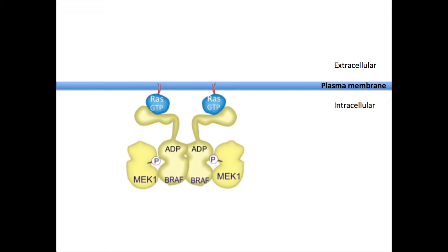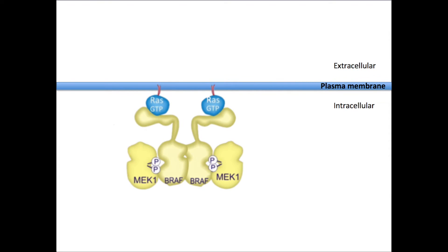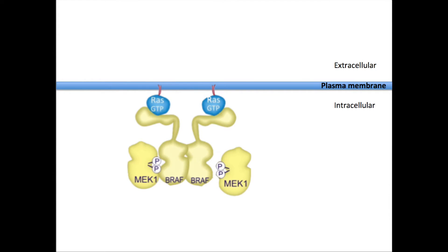Now BRAF can phosphorylate MEK. BRAF will hydrolyze ATP, so one of its phosphate groups is given to MEK. It will do this twice because BRAF can phosphorylate two residues, serine and threonine. MEK is now activated and detaches from BRAF.